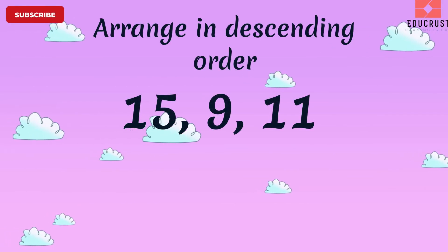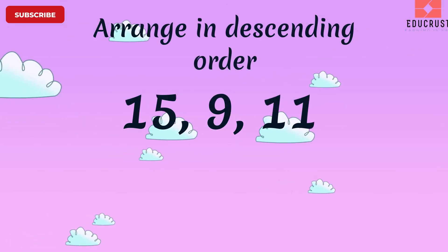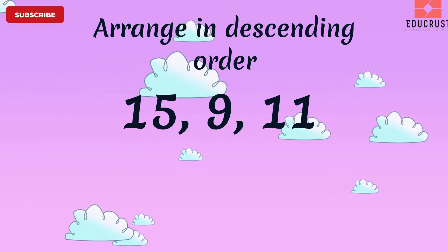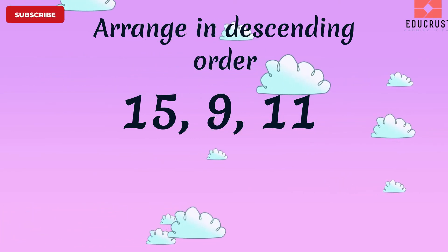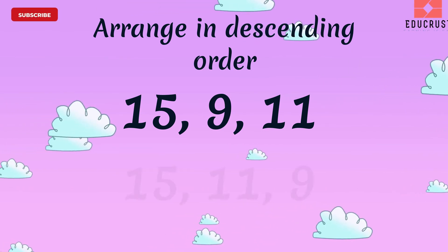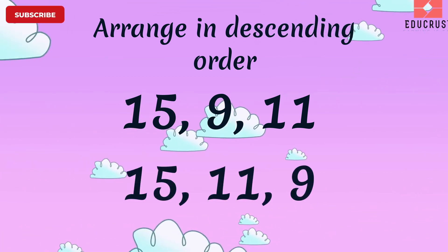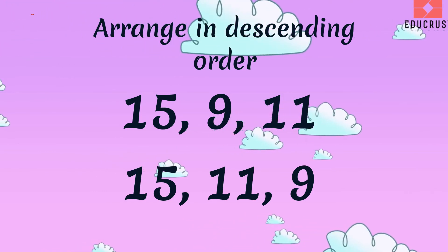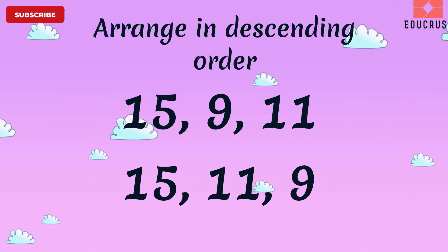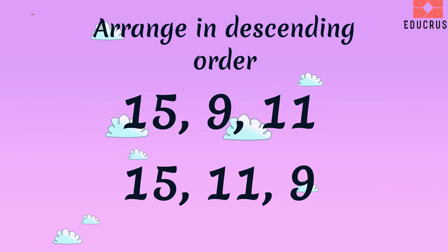Arrange the numbers 15, 9, 11 in descending order, or biggest to smallest. As per our rule, 15 will come first, then 11 will come, and 9 will come in the end.